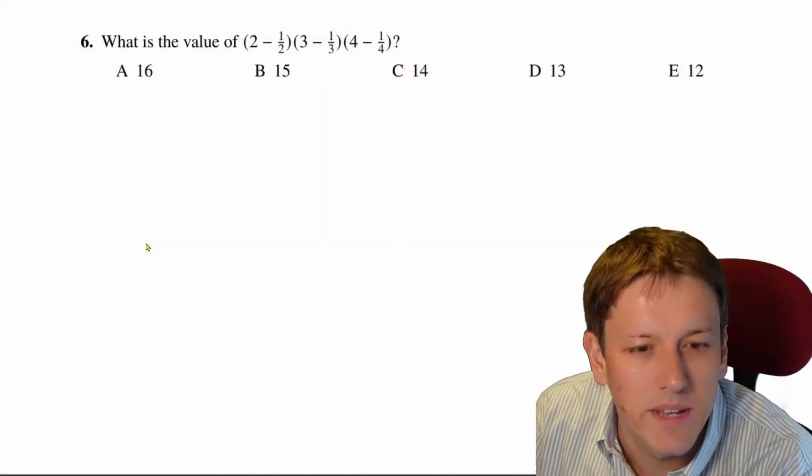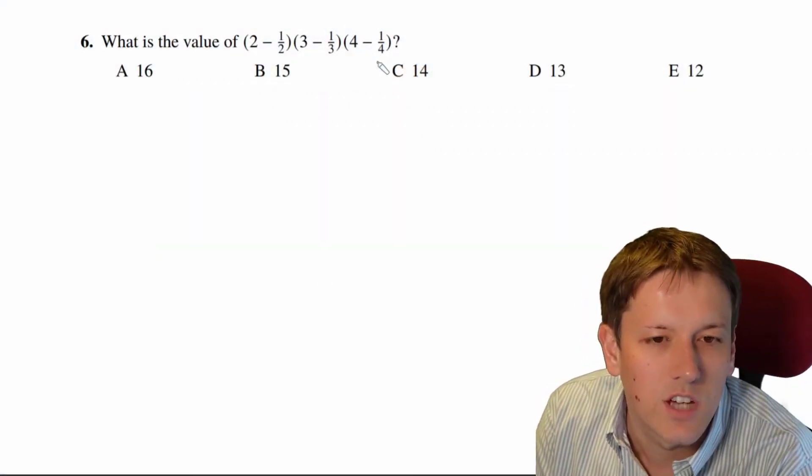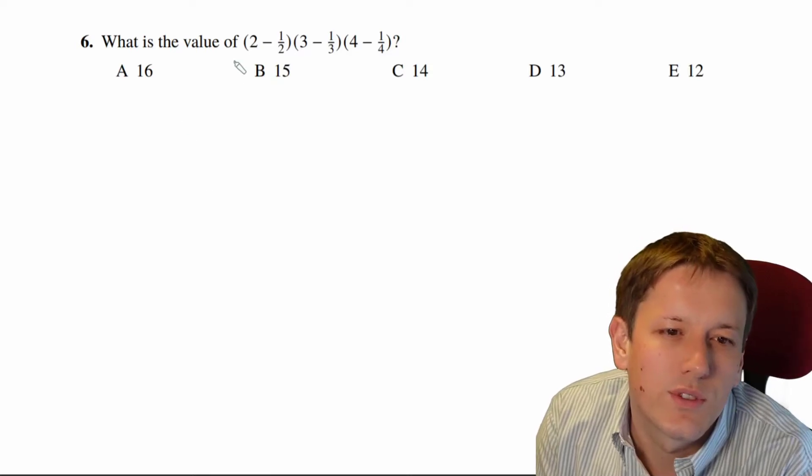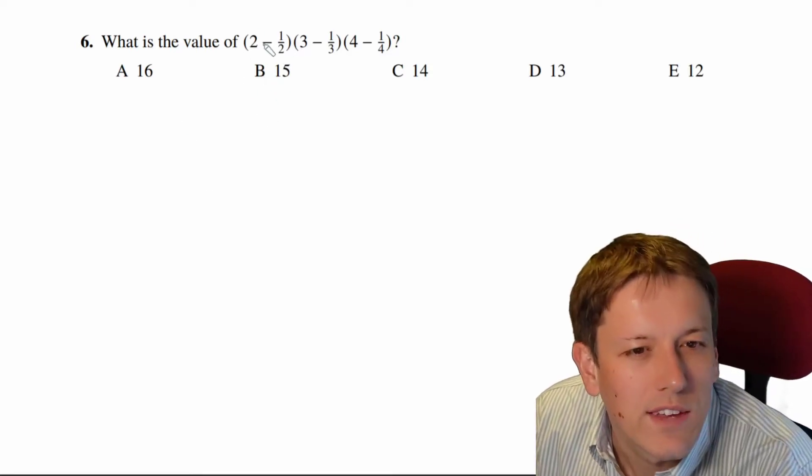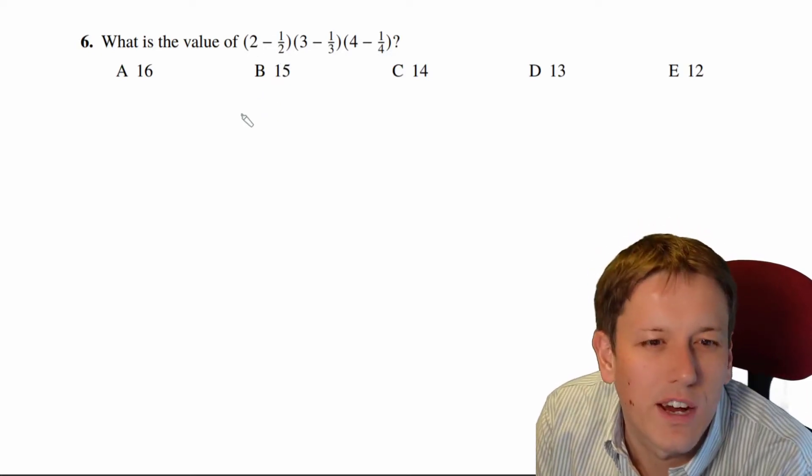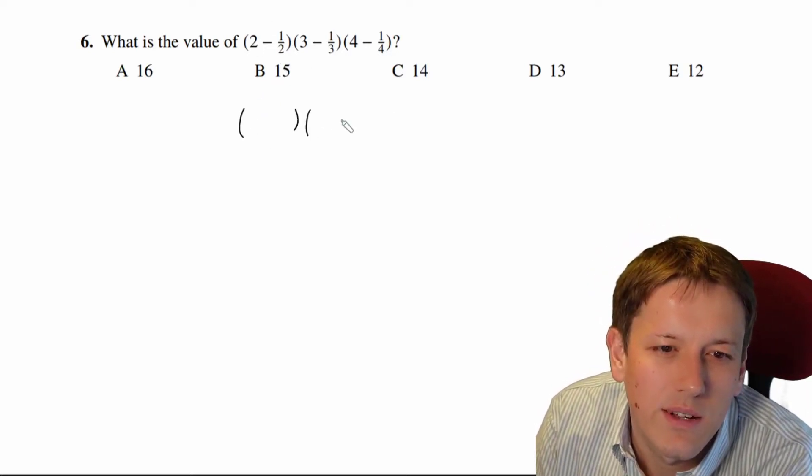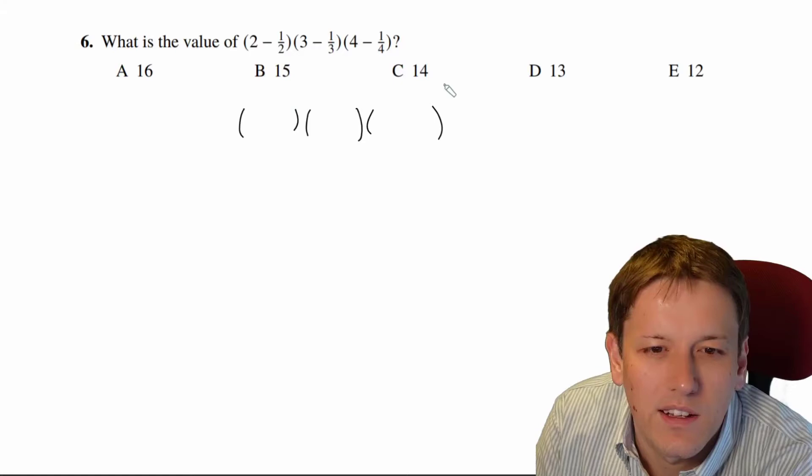Okay, so we've got to multiply (2 - 1/2) times (3 - 1/3) times (4 - 1/4). Well, 2 minus a half, that's 1 and a half, or in fact I want to think of these all as top-heavy fractions, so I might actually just write this out to make it a little clear as well.